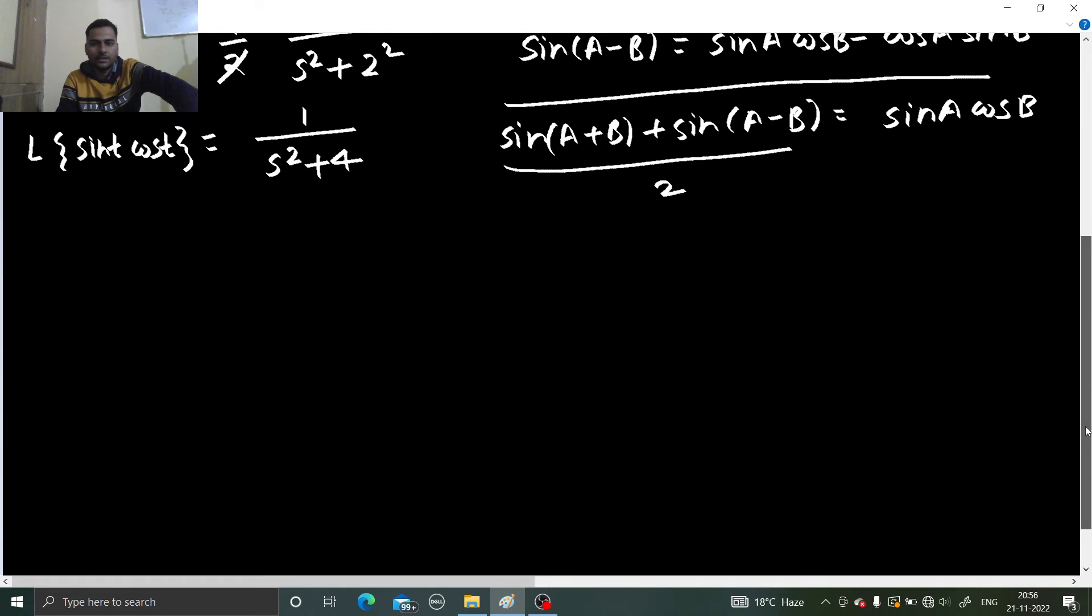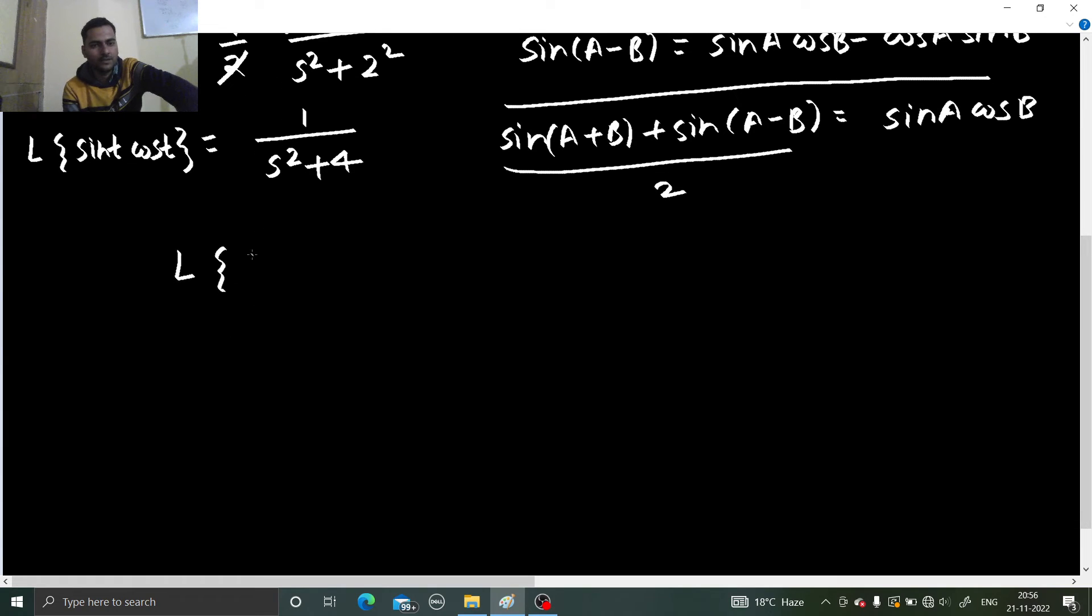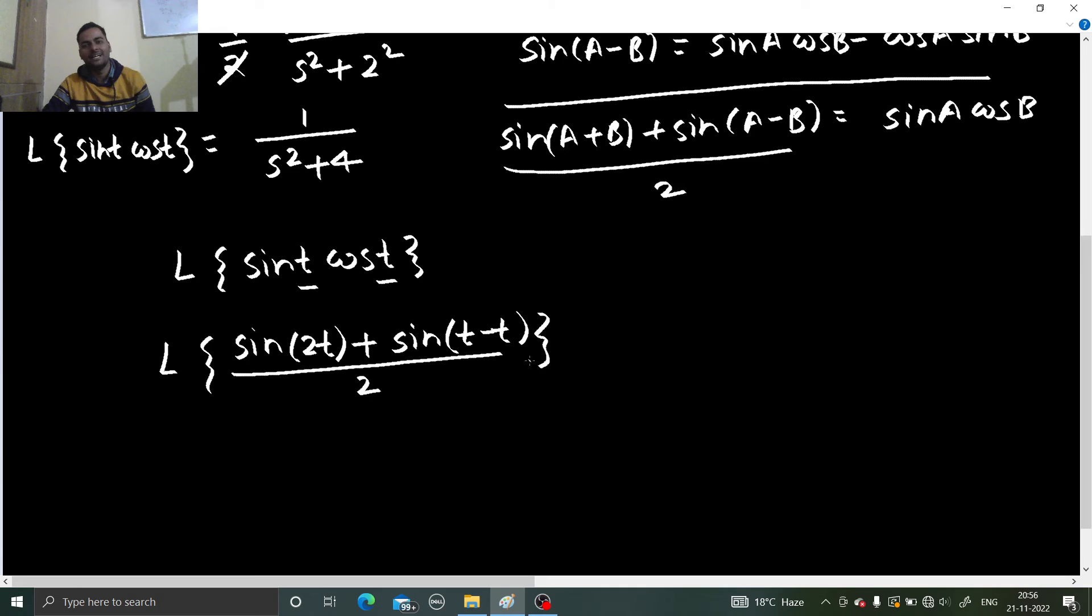I needed to find Laplace of sin t cos t. That will be Laplace of sin their sum, so sin, this is your a this is your b, so t plus t is 2t, plus sin their difference, so t minus t is nothing but 0, divided by 2. This is in some way or another the derivation of the sin 2t formula also. So sin 0 is 0.